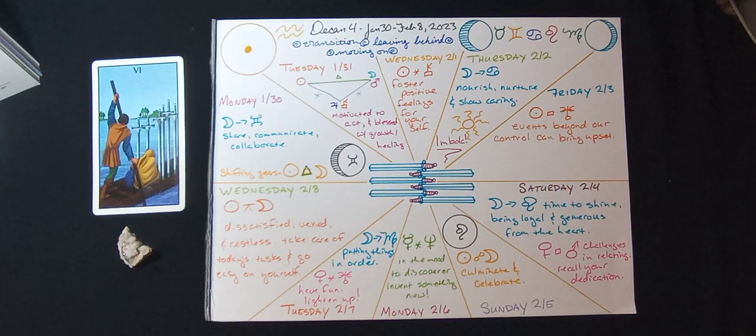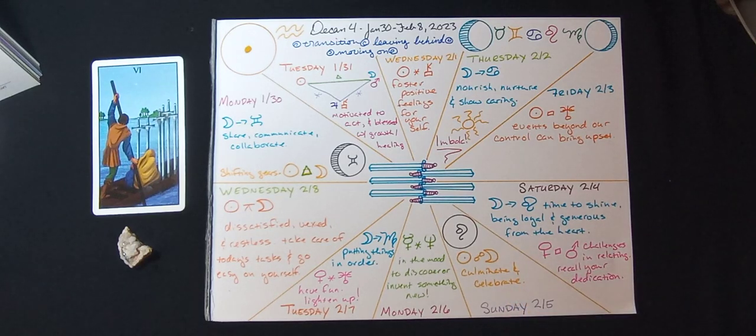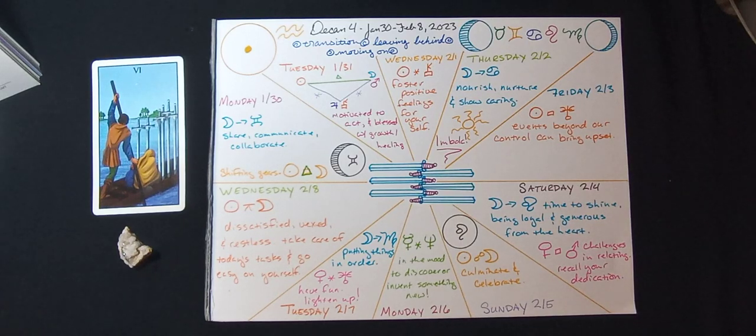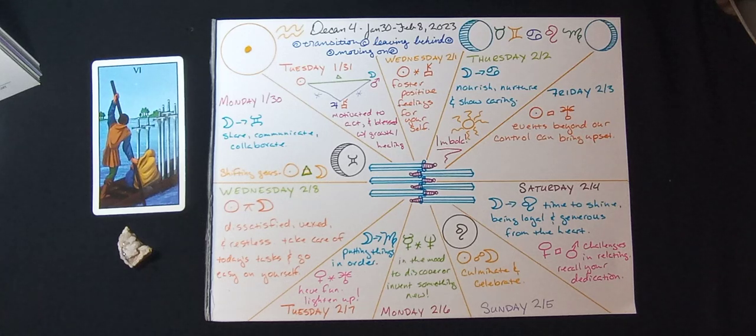Then on Saturday the 4th, the Moon moves into Leo. This is a time to be our dazzling selves, to show our loyalty, to be generous with our gifts, and to appreciate the contributions of others. Venus will culminate a square to Mars that day in Taurus and Libra, Aries and Scorpio. We may find that we are not quite on the same page with a loved one. This is when it will be important to remember why we're committed to the well-being of this person and our connection with them.